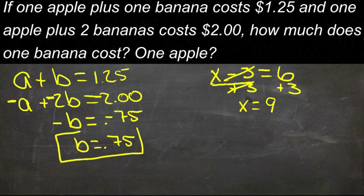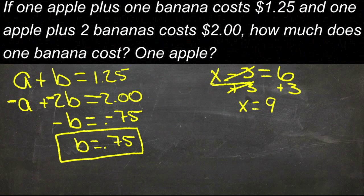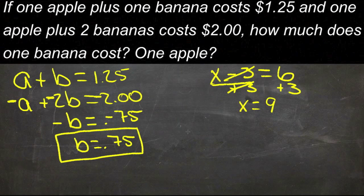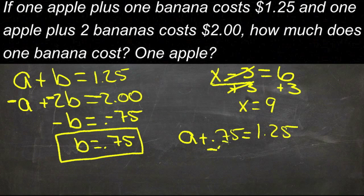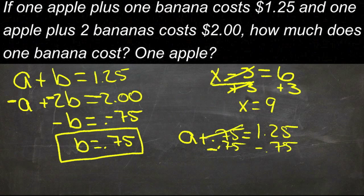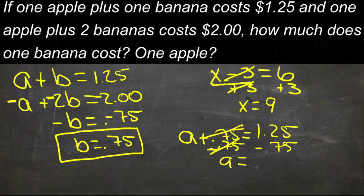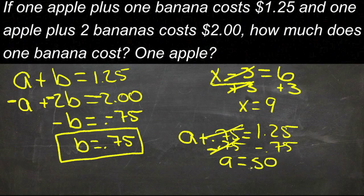So we know that b is 0.75, and then we can take that value and plug it back into one of our other equations. We'll use the top one because it'll be easier. A plus 0.75 equals 1.25. Subtract 0.75 from both sides. That cancels, and I get a equals 0.5.